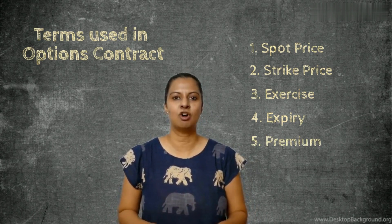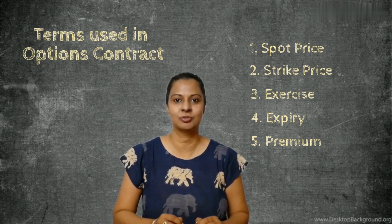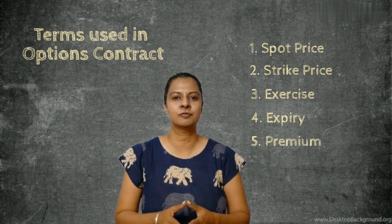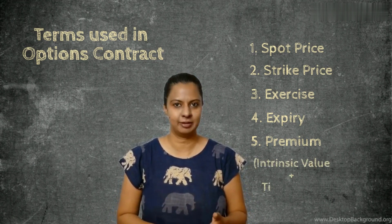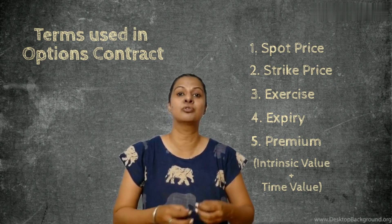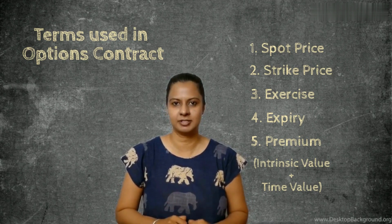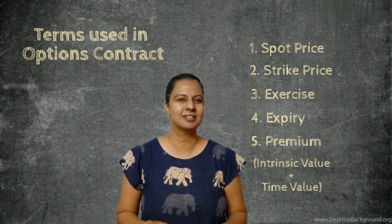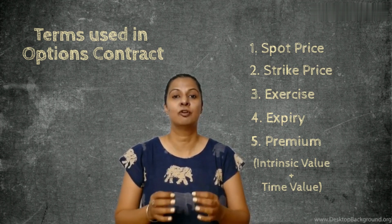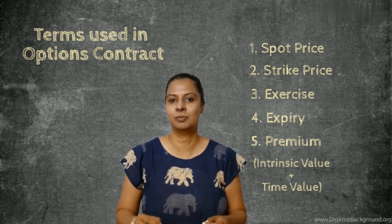The last and most important term is premium. This is the amount that the option buyer pays to the option seller for the right to exercise the options contract — that is, to buy or sell an underlying asset at the time of expiry. It comprises two things: intrinsic value and time value. Intrinsic value is the amount that the options buyer is entitled to if he were to exercise his option; it is basically the difference between the spot price and strike price. Time value is a slightly technical concept, but in simple words, it is the amount that the option buyer pays to the seller for the duration of the contract. The longer the time to expiry, the higher will be the time value.